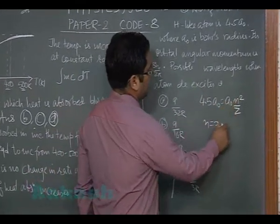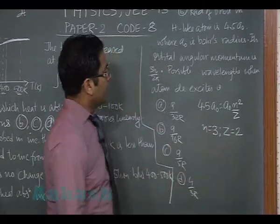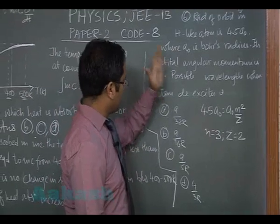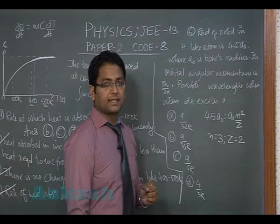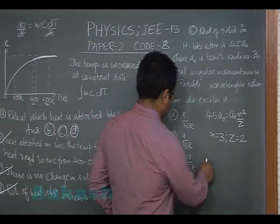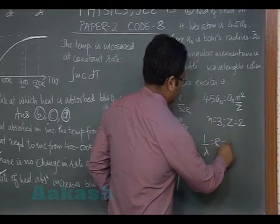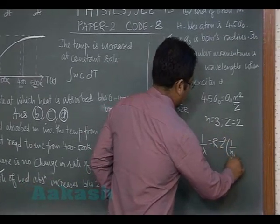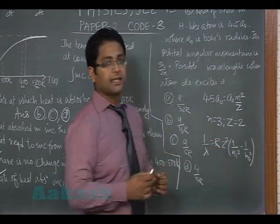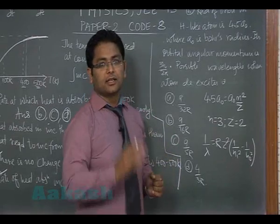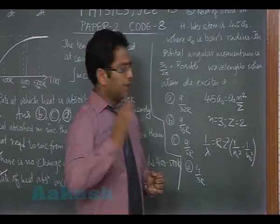And if you put n=3 here, we also get Z equals 2. And we have to see the possible wavelength when the atom de-excites. That's going to be 1/λ equals RZ²[1/n₁² - 1/n₂²]. The atom is at state 3, so possibilities are from 3 to 1, 3 to 2, and 2 to 1.